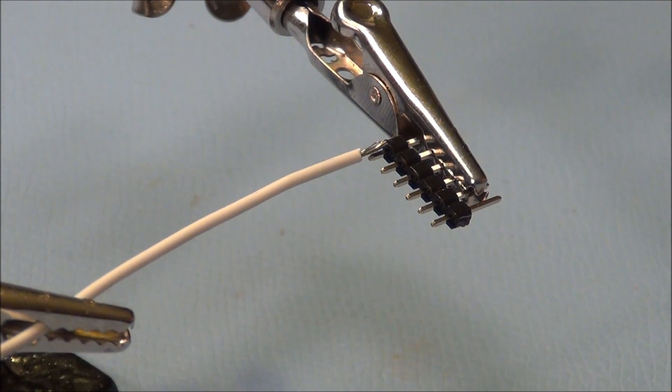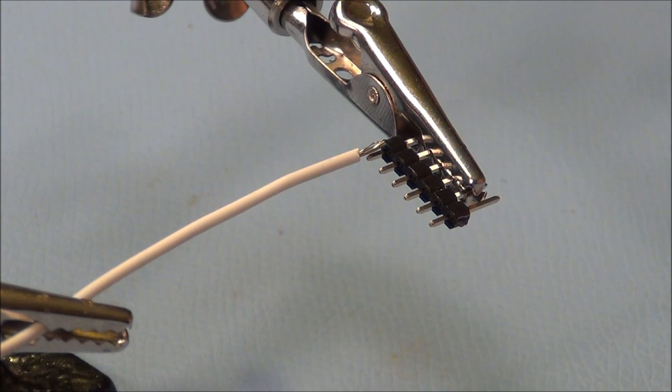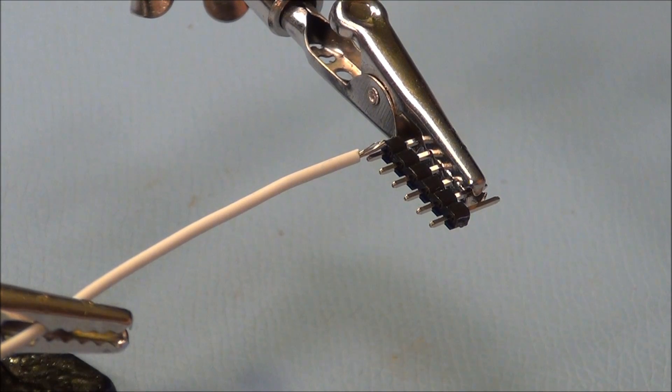Okay, so in a moment we'll put the heat shrink tubing on the connector that we just started and then do the other half of our solders. But before we do that, I'd like to show you why you can't do this the traditional way of heating the base metals and then feeding the solder into the heated base metals.